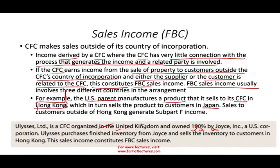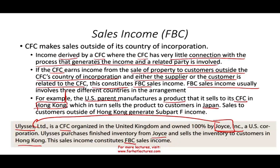Another example: Ulysses Limited is a Controlled Foreign Corporation organized in the UK and owned 100% by Joyce, a U.S. company. Ulysses purchases finished inventory from Joyce and sells the inventory to a customer in Hong Kong. A company in England, owned by a U.S. company, buys goods from the U.S. company and sells them to Hong Kong — this is foreign-based company sales income, which means it is Subpart F income. The profit is taxed now; you cannot defer it.